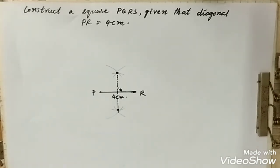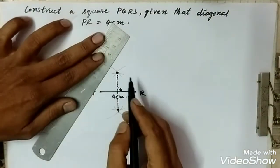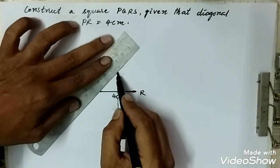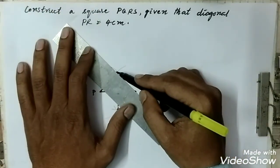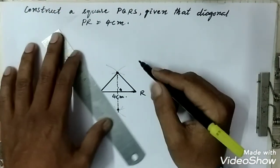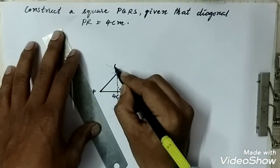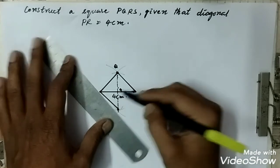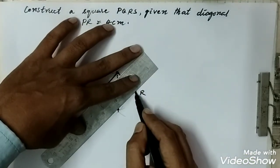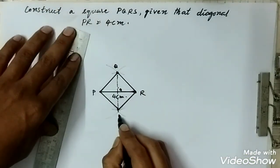Using the scale, join these points from P to this side and from R to this side. Suppose this is Q. And from P to this point and from R to this point, suppose this is S.